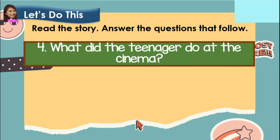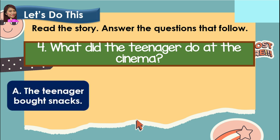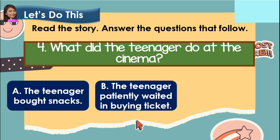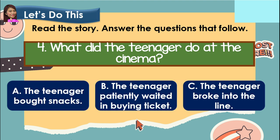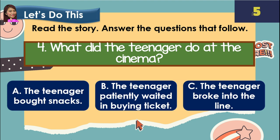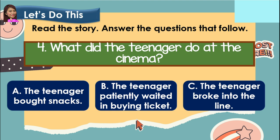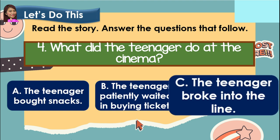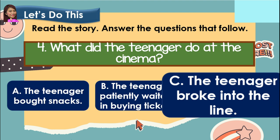Number four: what did the teenager do at the cinema? A. The teenager bought snacks. B. The teenager patiently waited in buying a ticket. Or C. The teenager broke into the line. What do you think is the correct answer? And the correct answer is letter C: the teenager broke into the line.